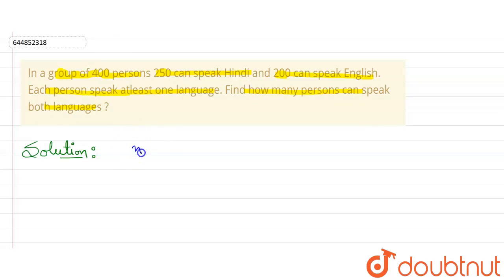It is given that persons who can speak Hindi are 250 in number. Similarly, English speakers are 200 in number.